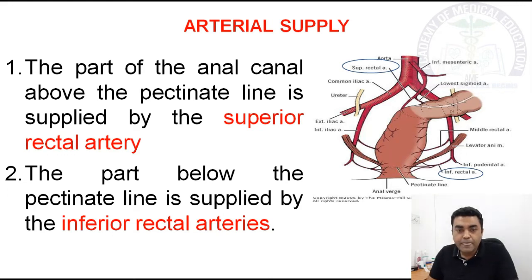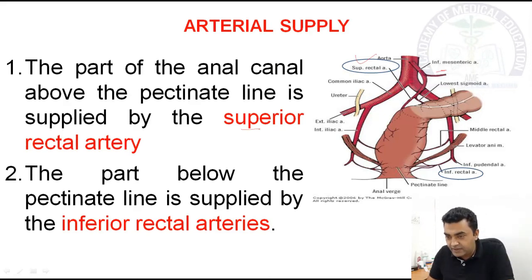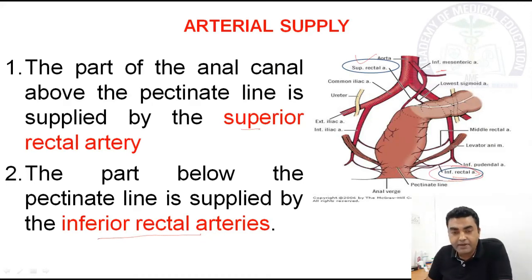Arterial supply of the anal canal: the part above the pectinate line is supplied by the superior rectal artery, which is a branch of the inferior mesenteric artery. The part below the pectinate line is supplied by the inferior rectal artery, which is a branch of the inferior pudendal artery, which is itself a branch of the internal iliac artery.